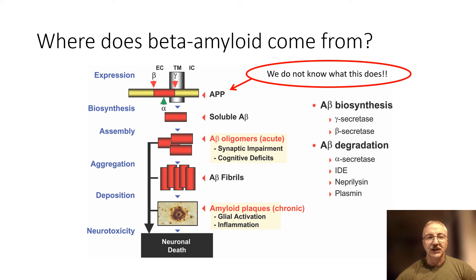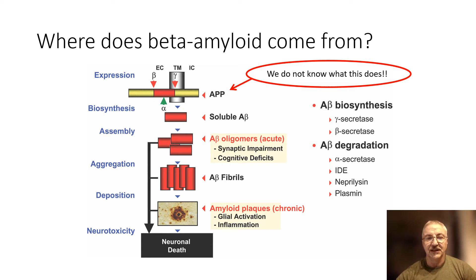Beta amyloid comes from amyloid precursor protein, which appears to be ubiquitous from annelid worms onwards. We do not know what it does. We know that it is cleaved and forms these oligomers which lead to synaptic impairment, then forms into beta-pleated sheets which produce the plaques, the neurites around them, and the inflammation.